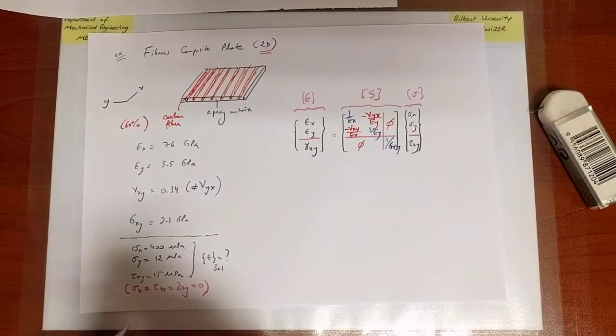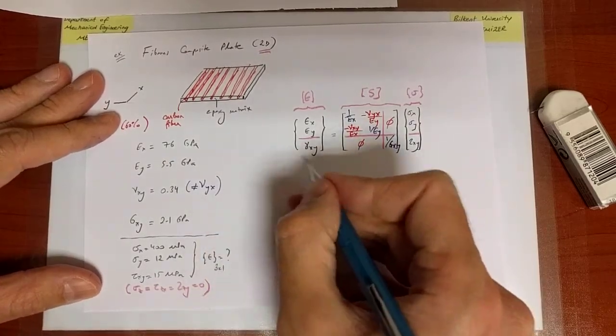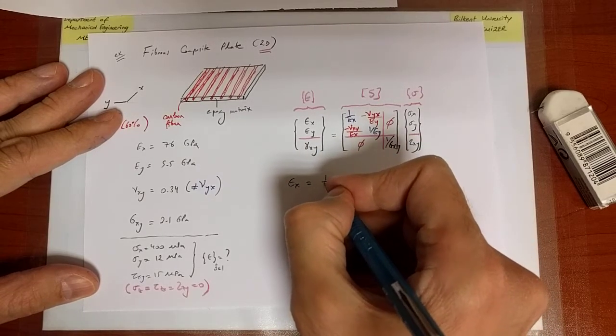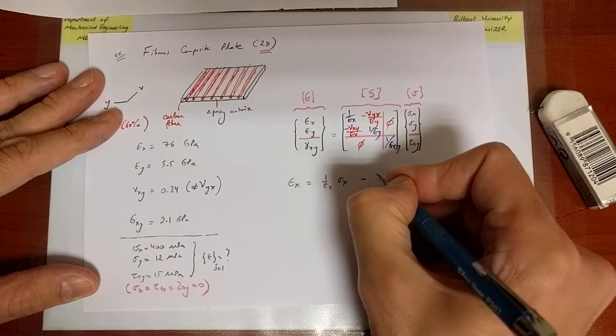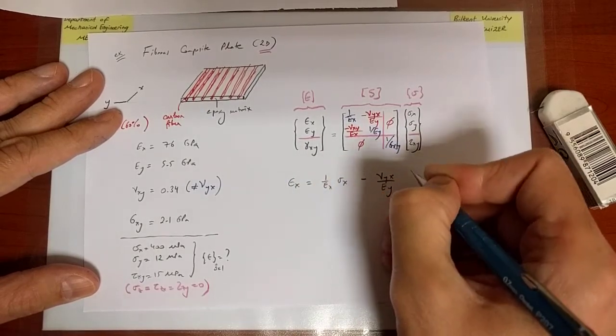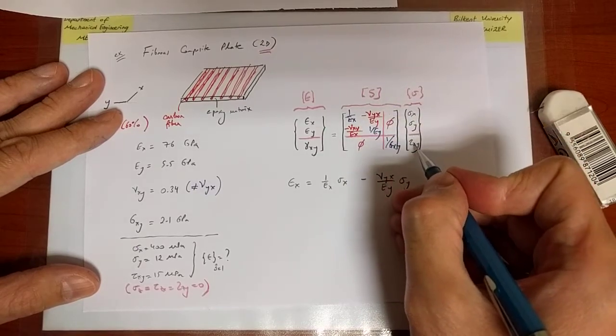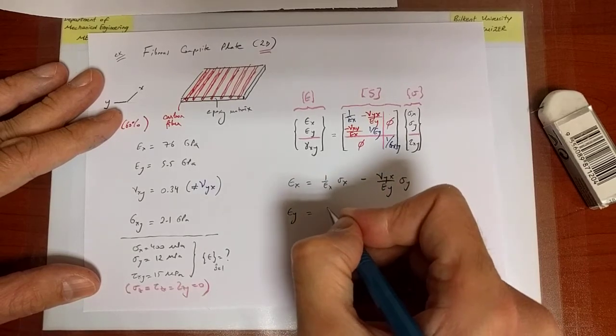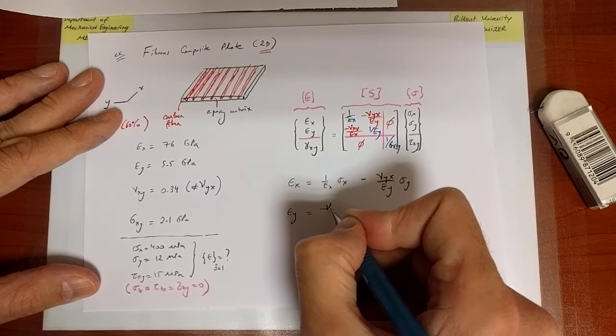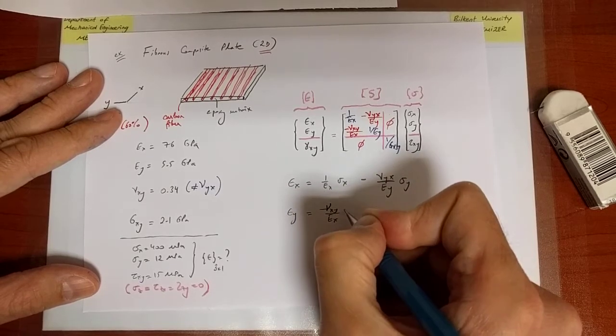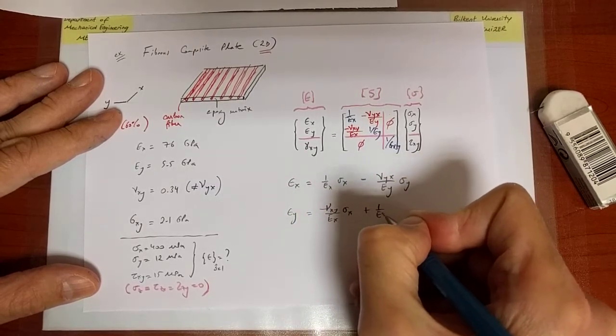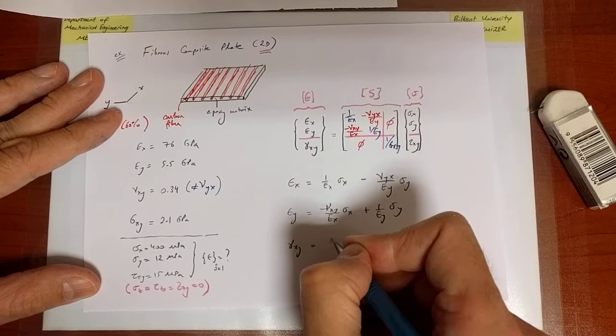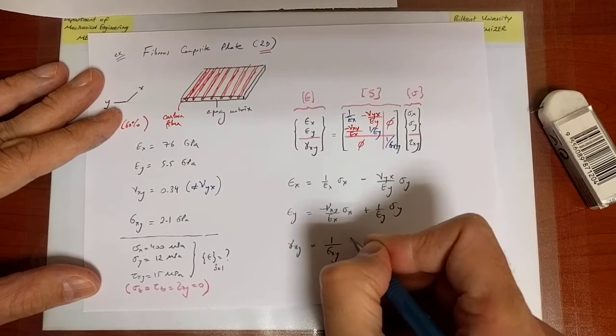If I have that structure now, then I can easily write the components of the strain. Epsilon_x is going to be equal to 1 over Ex sigma_x minus nu_yx over Ey multiplying sigma_y. Epsilon_y is minus nu_xy divided by Ex multiplying sigma_x plus 1 over Ey sigma_y. No contribution from shear stress.